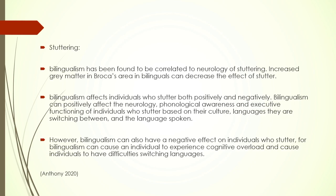Starting with stuttering — stuttering is not exactly a disorder per se but it is a disturbance in speech. Recent studies have looked at the correlation between bilingualism and stuttering, more specifically the neurology of stuttering. We already know that there is increased grey matter in Broca's area in bilinguals. Now researchers are looking at whether this has an effect to decrease the effect of stuttering — because stuttering has to do with motor control of speech, and Broca's area controls articulation in human speech. So if there is a higher amount of grey matter in Broca's area, could it be correlated to some advantageous effect on stuttering?